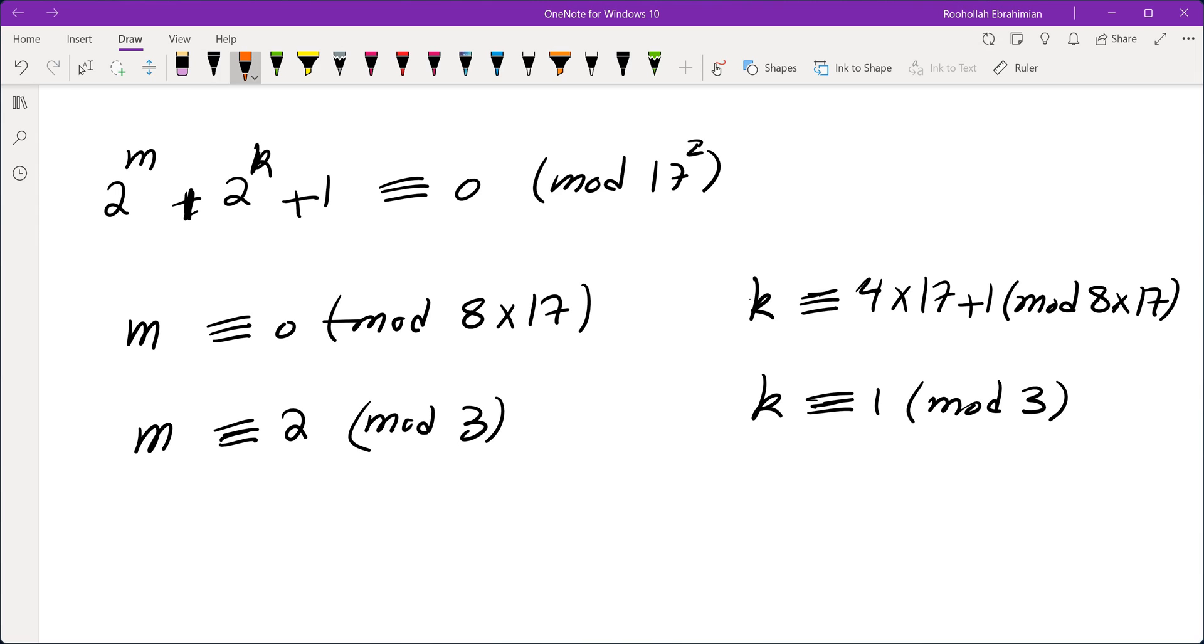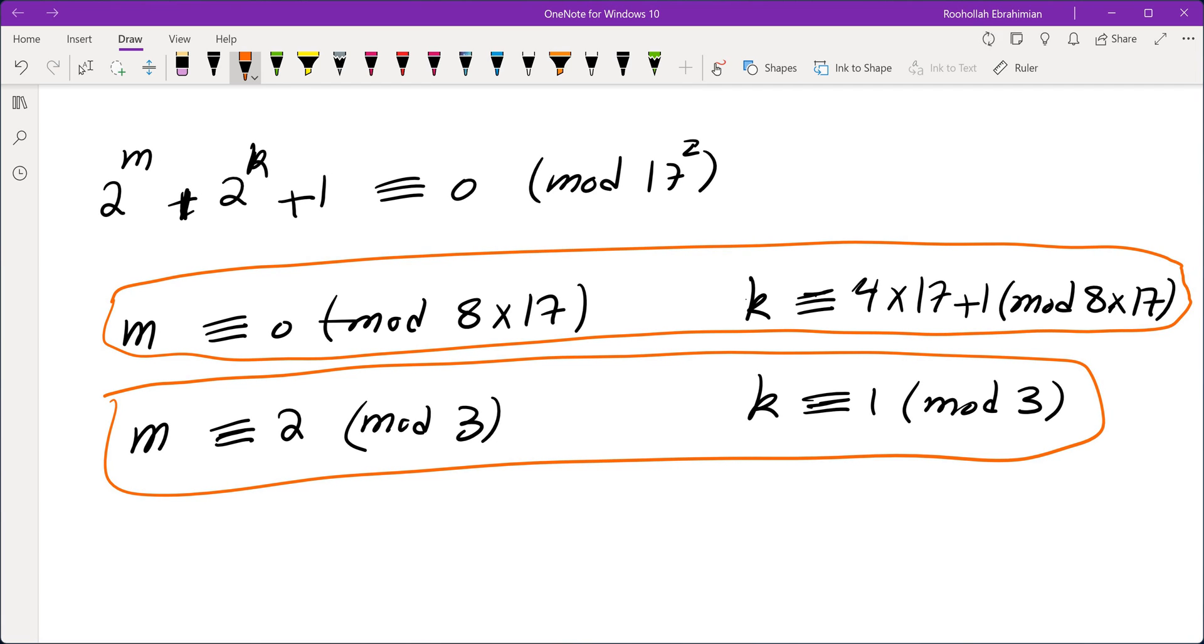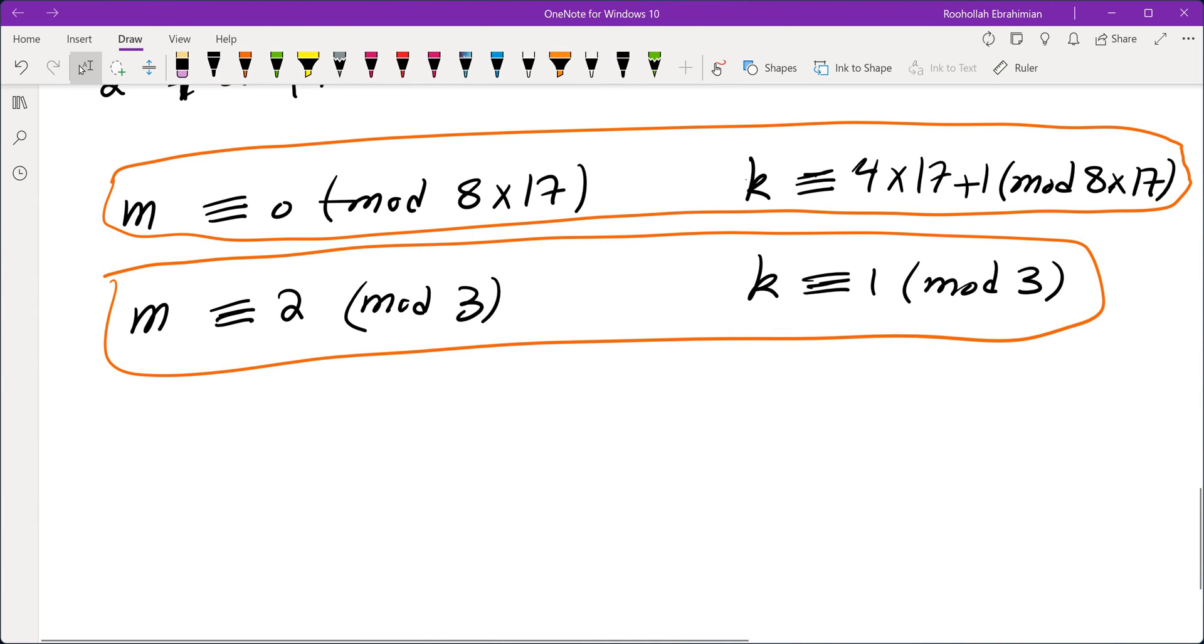then the second condition gives me that 2 to the power of m plus 2 to the power of k plus 1 is 0 mod 7. The first condition tells me it is 0 mod 17 squared, which means 2 to the power of m plus 2 to the power of k plus 1 is, in fact, a multiple of 2023, which means k(n) for this number is exactly 3. So that means 3 is the smallest possible value of k(n).